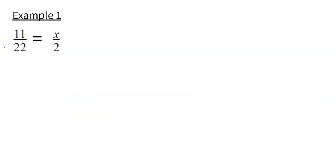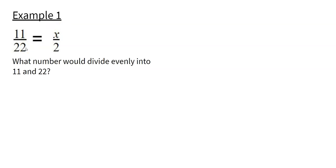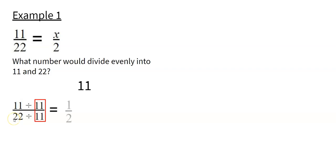Example 1: 11 over 22 is equal to x over 2. We're trying to figure out what number divides evenly into both 11 and 22 — that number would be 11. 11 goes into 11 one time, and 11 goes into 22 two times. This gives us a denominator of 2, matching the other fraction, so x is equal to 1.